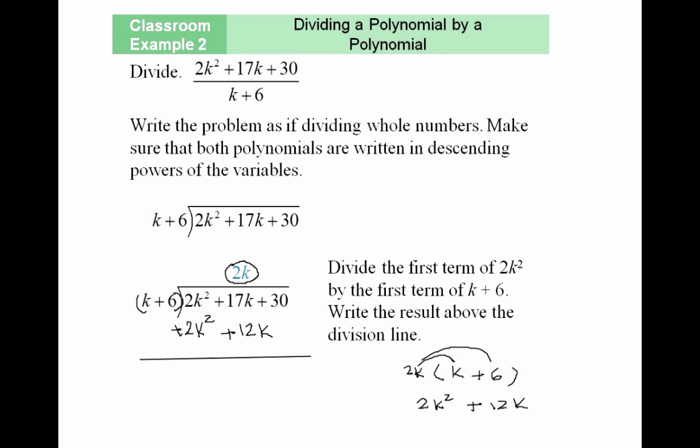You subtract the bottom row from the top row. When you subtract in columns, you can change the sign of the second row to its opposite and then add instead. So change the signs in the second row to their opposites and change this to addition. Simply add the first row to the second row with these new signs to find the remainder.